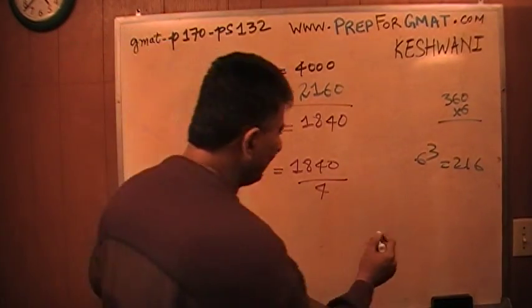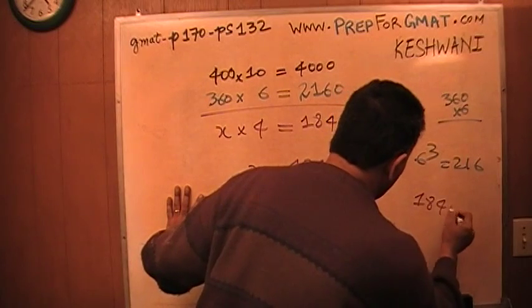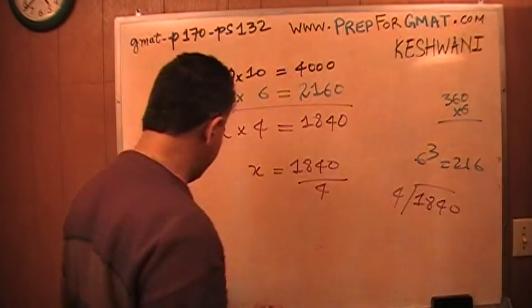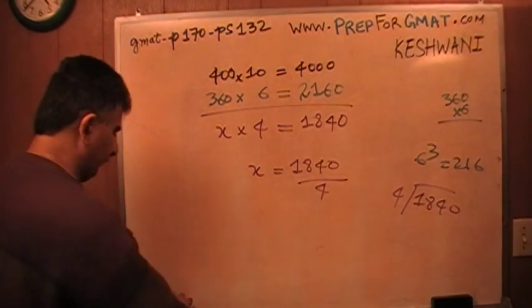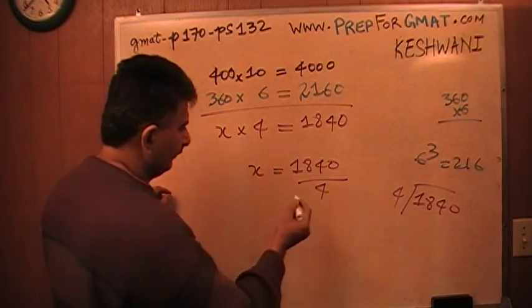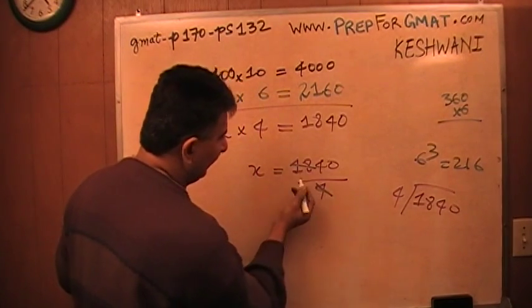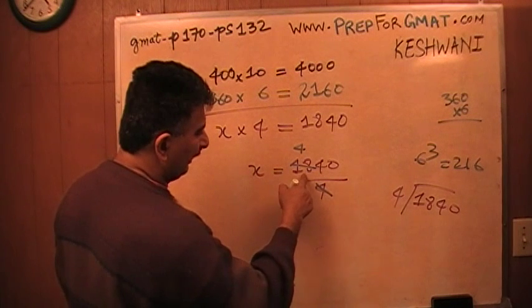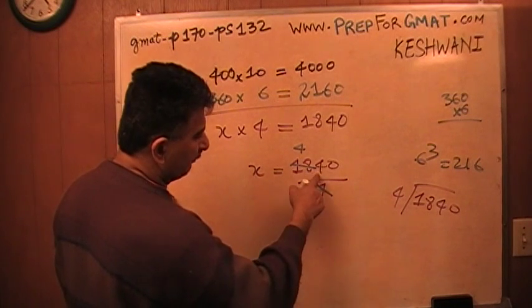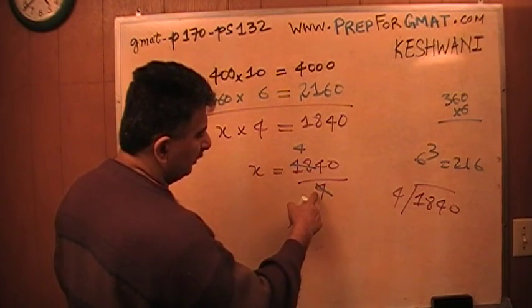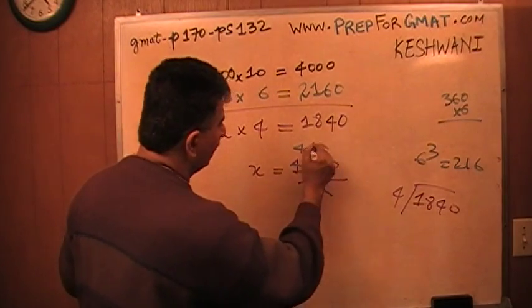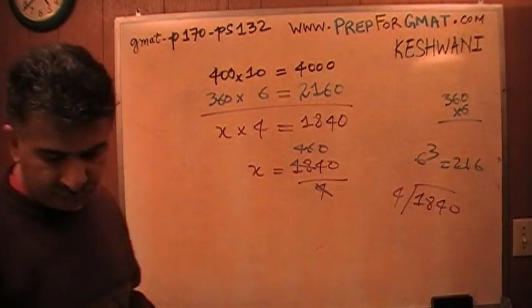You shouldn't have to waste your time doing it longhand. Do it like a grown-up. 4 goes into 18, 4 times, that's 16. I have 2 left over, and 24 divided by 4 is 6, so it's 460. 460 is my answer.